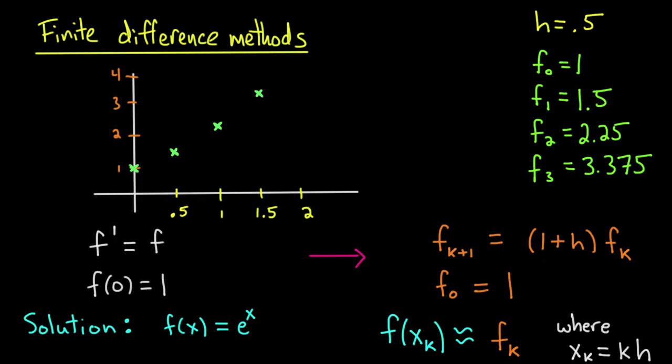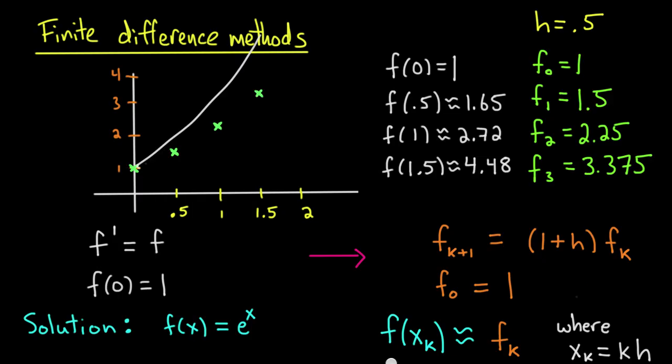Now you can compare that with the values of the actual solution, since we know the actual solution, it's e to the x. The actual solution evaluated at 0 is 1. The actual solution evaluated at 0.5 is approximately 1.65, so that's a little over my approximation of 1.5.